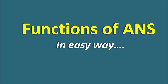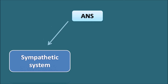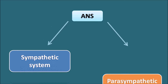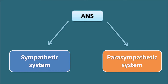Functions of the autonomic nervous system in an easy way. The autonomic nervous system has two divisions: the sympathetic system and the parasympathetic system. These two divisions maintain homeostasis in the body, but they act differently at different organs. In this video, we will see how these two divisions work at different organs and how we can easily understand the functional roles of the autonomic nervous system.